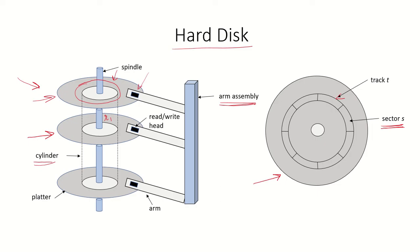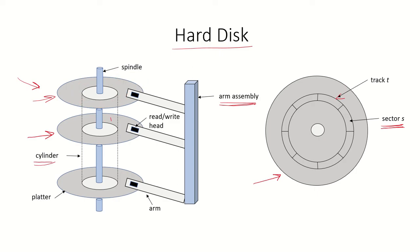Once the read/write head is over a particular track and a particular sector on that track is required to be read, the spindle rotates and that particular sector is brought under the read/write head. So if we want to read a particular track and a particular sector on that track, first the arm assembly moves so the read/write head comes over that track, then the spindle rotates so that sector comes under the read/write head and the data can be read.